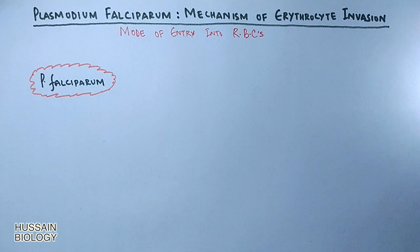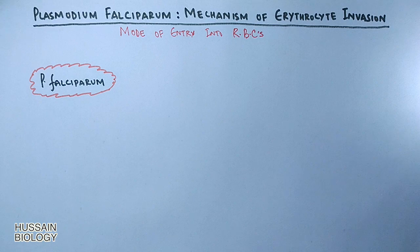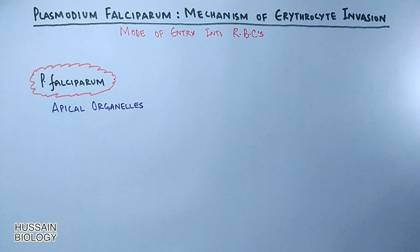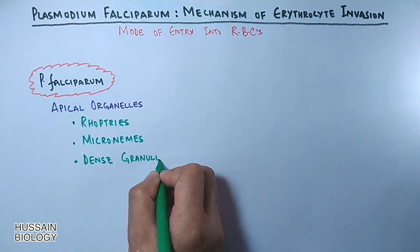First of all, we will see what are the special tools or organelles that help this Plasmodium to get into the red blood cells. The organelles present in Plasmodium falciparum are called apical organelles. In Plasmodium falciparum we see it has rhopteries, micronemes, and few dense granules.